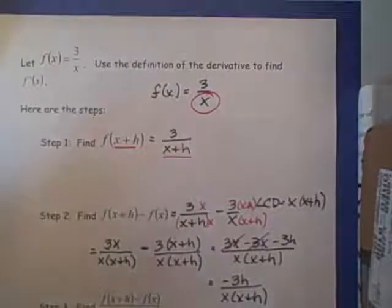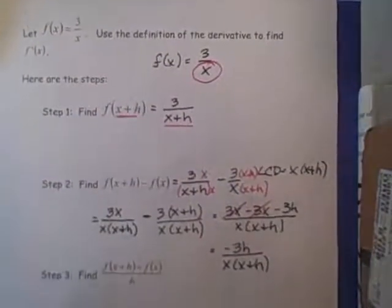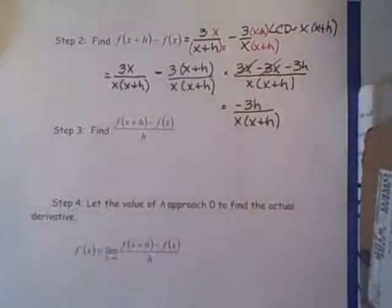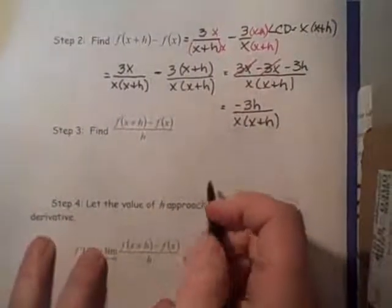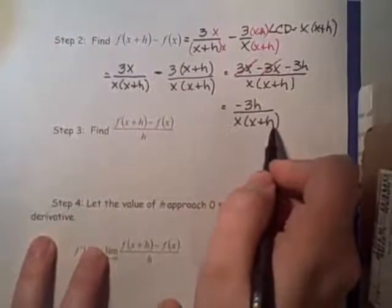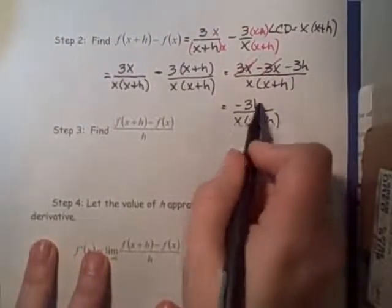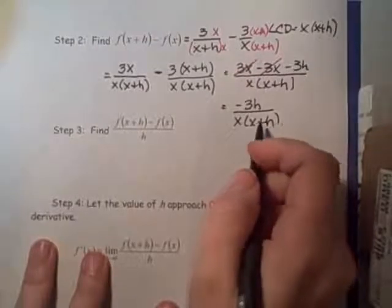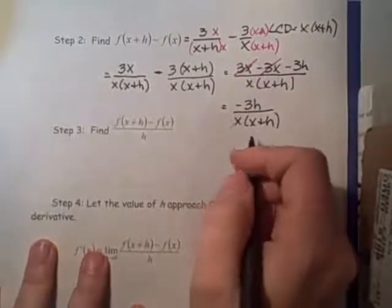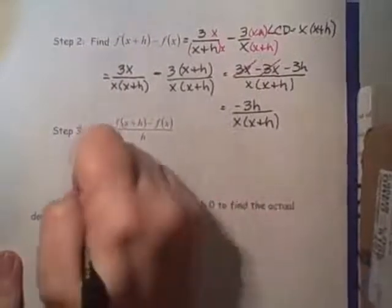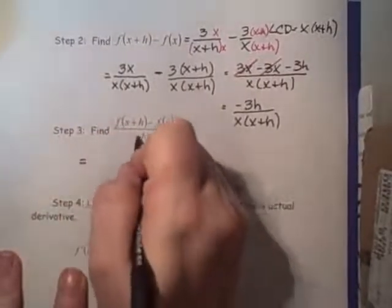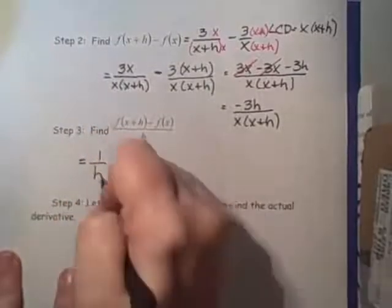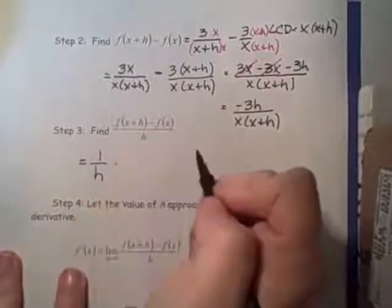The next step is to divide what we have in step 2 by h. When we have a fraction, that's sometimes a little bit tedious to work with. It's actually easier if we think of this as multiplying by 1 over h instead of dividing by h. That's the same idea.